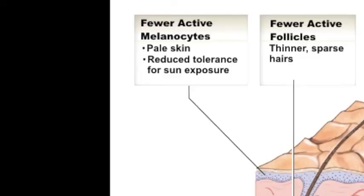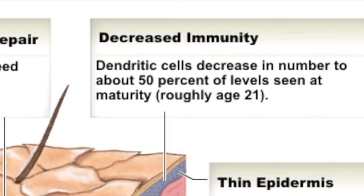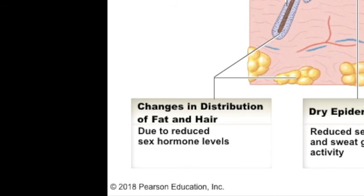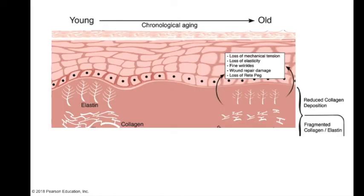There is reduced gland activity overall, decreasing the ability to cool via sweating and causing drier, sometimes scaly skin due to decreased sebaceous gland activity. Changes in melanocytes and their activity cause altered skin pigmentation — hair becomes gray or white — and greater sensitivity to sun exposure. Immune cell efficiency also decreases. Drops in estrogen and testosterone affect fat and hair distribution, for example decreasing hair growth on the head while increasing it in the nose and ears. Collagen and elastic fibers begin to break down or become less elastic, causing sagging and wrinkling distinct from expression-related creases like laugh lines.